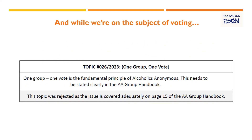Just while we're on the subject of voting, just in case you're watching this and you're not a conference member, here's a topic from 2023. It was a beautifully written topic: 'One group, one vote is the fundamental principle of Alcoholics Anonymous.' We now know why — because AA is based on democracy, and democracy in all forms is based on one person, one citizen, one vote. 'This needs to be stated clearly in the AA group handbook.' Conference in its wisdom suggested this topic was rejected, as the issue is covered adequately on page 15 of the AA group handbook.